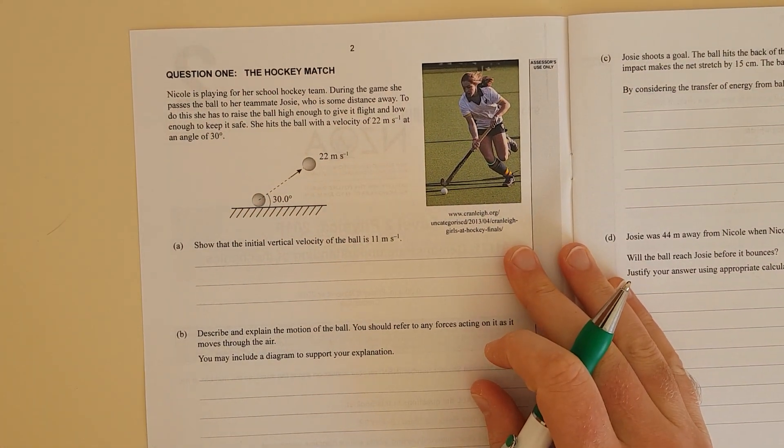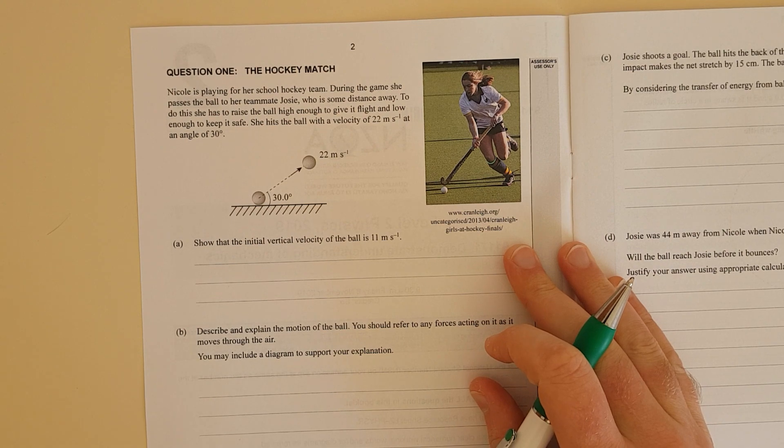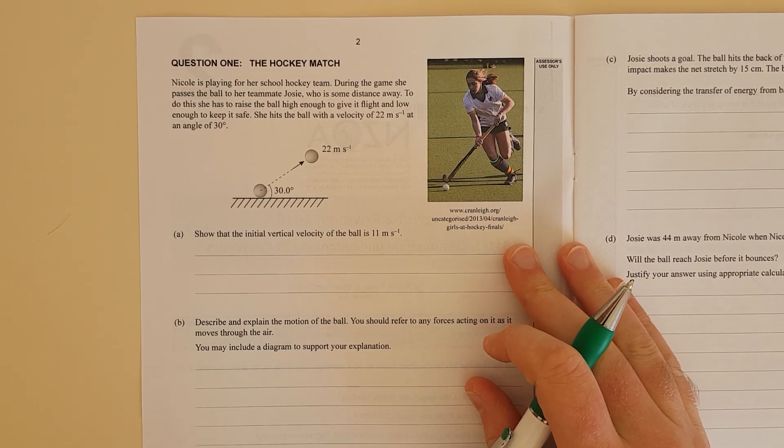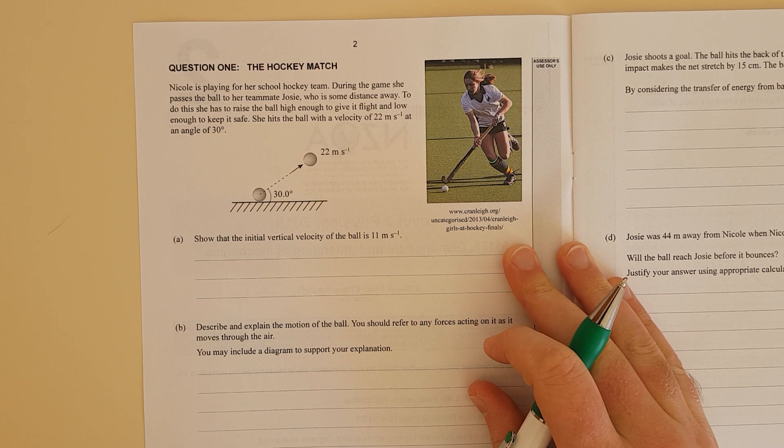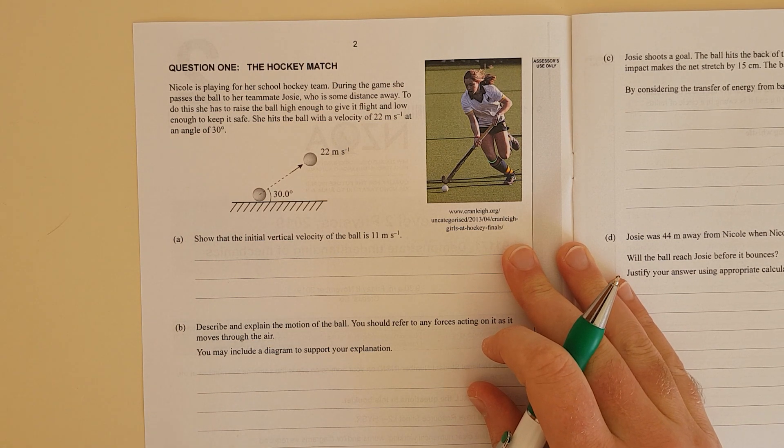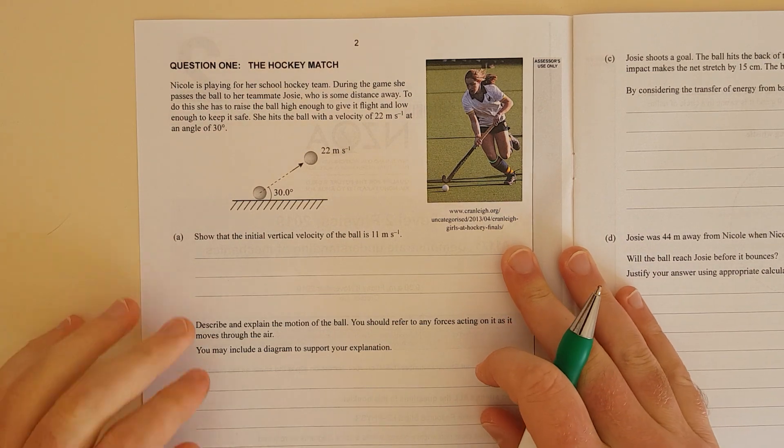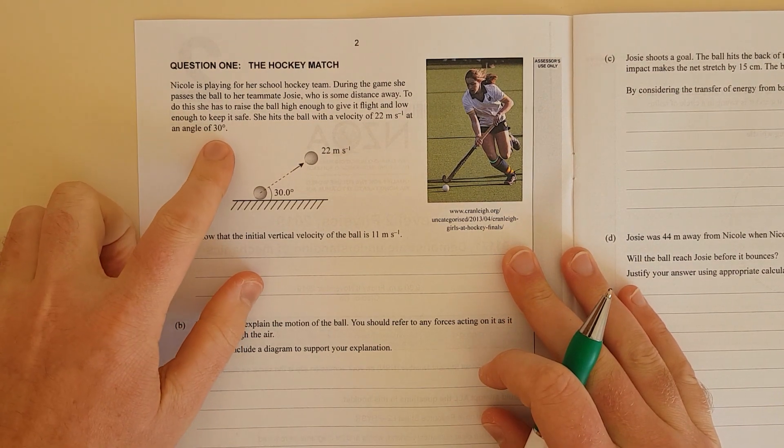Nicola was playing hockey for a school team. During the game she passes the ball to her teammate Josie who was some distance away. She has to raise the ball high enough to give it flight and low enough to keep it safe. She hits the ball with a velocity of 22 meters per second at an angle of 30 degrees to the horizontal.